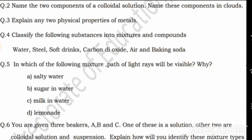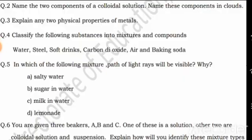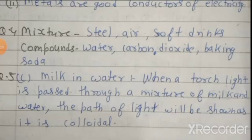Third: Physical property of matter. They are good conductors of electricity. Identify mixture and compound: water, steel, soft drink, carbon dioxide, air, and baking soda. Answer: Compounds are water, carbon dioxide, and baking soda. Mixtures are steel, air, and soft drink.